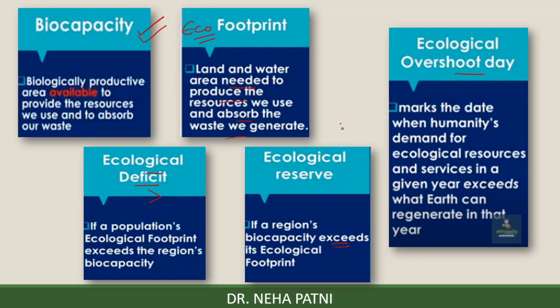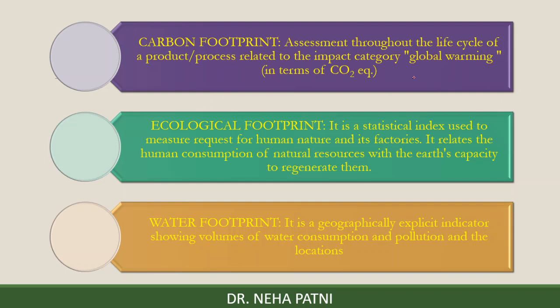To summarize: carbon footprint is related to CO2 emissions only. Ecological footprint measures area per person — land and water required for a human's consumption of natural resources and for absorbing the waste generated. Water footprint is related to the volume of water consumption, pollution, and locations where water is utilized. I hope you are able to understand and differentiate between all three. Please mention in the comments how you liked it, and if you have any doubts, do like, share, and subscribe. Thank you so much for being here.